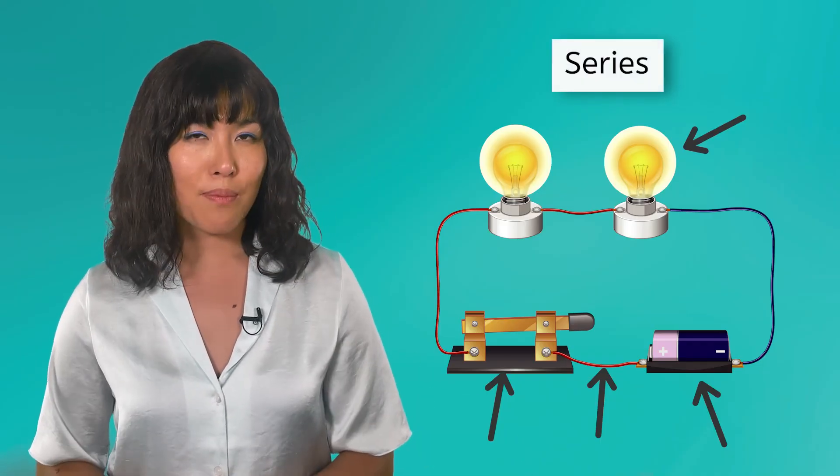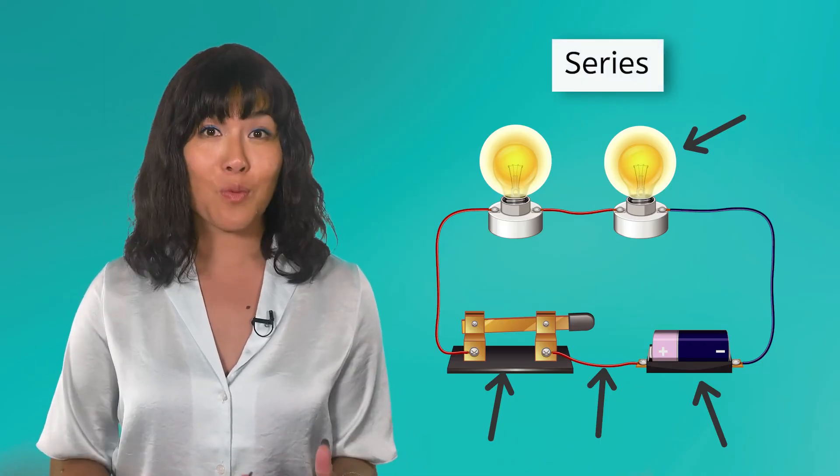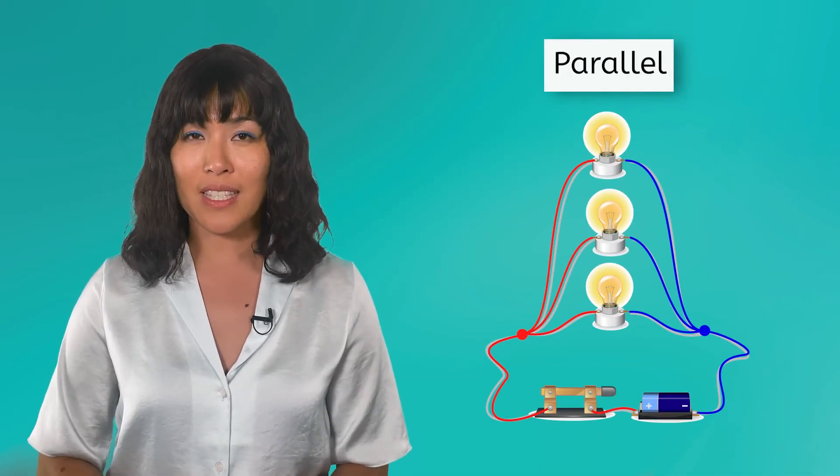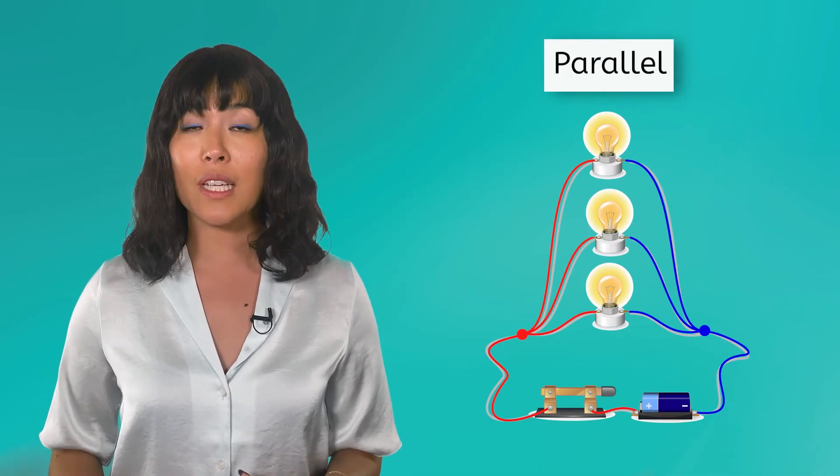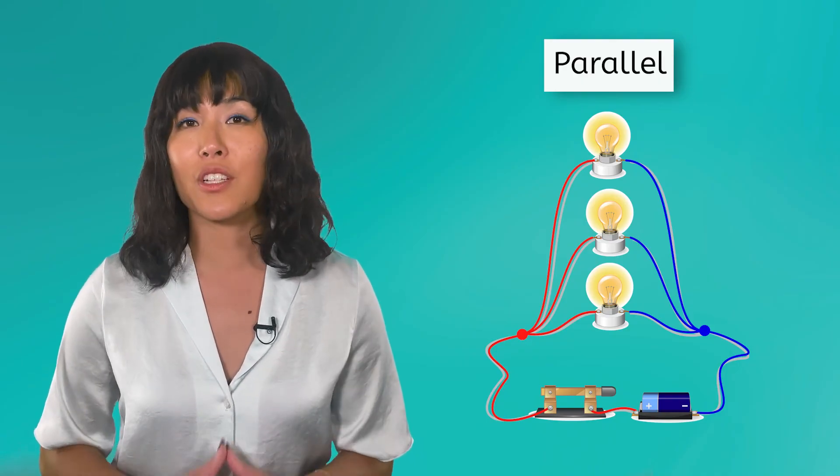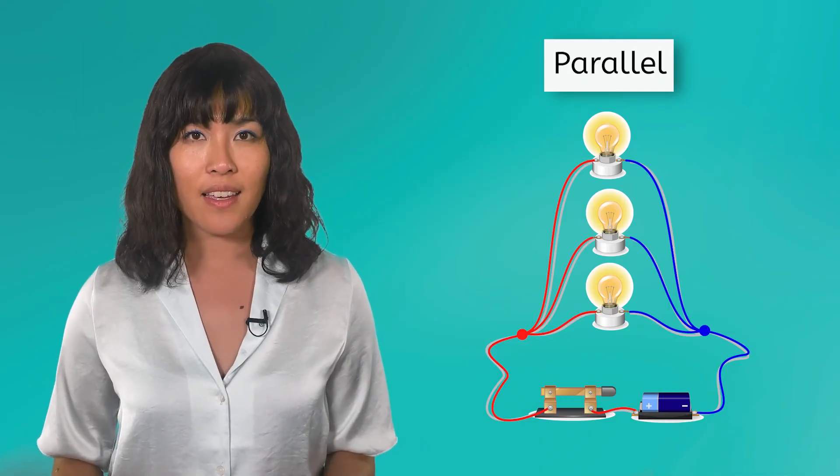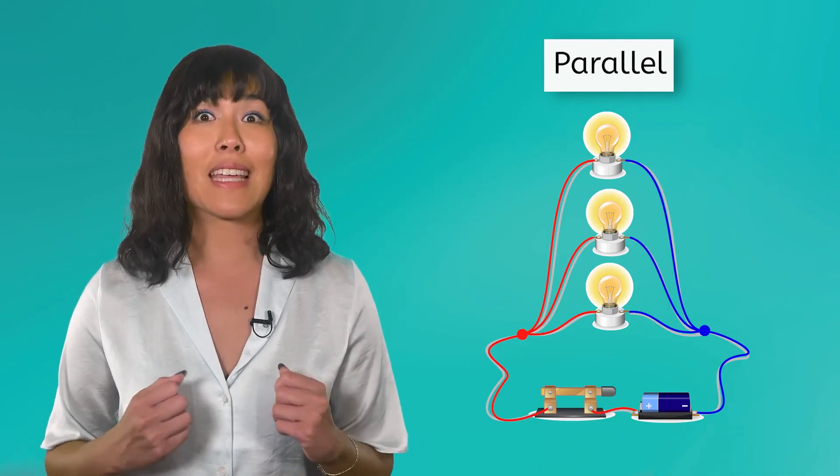We also saw that circuits can be wired in series or in parallel. We also saw that larger circuits have safety devices like fuses and circuit breakers that will stop the flow of electricity if the current becomes dangerously high, even if it means putting us in the dark.